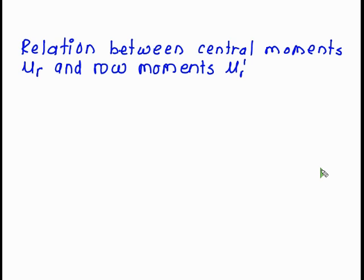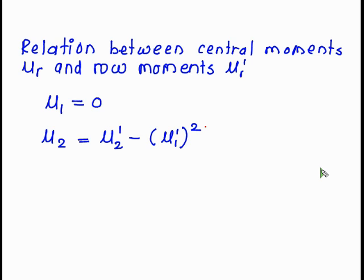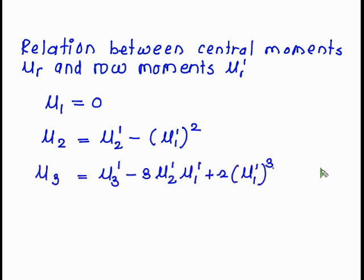Now we study the relation between the central moments mu r and the raw moments mu r dash. mu 1 is always equal to 0. mu 2 is equal to mu 2 dash minus mu 1 dash square. mu 3 is equal to mu 3 dash minus 3 mu 2 dash times mu 1 dash plus 2 times mu 1 dash cube.